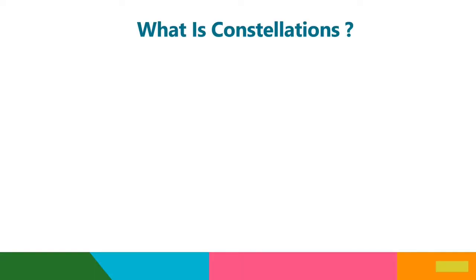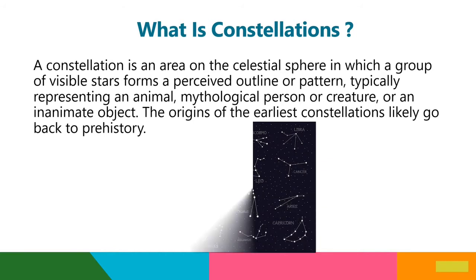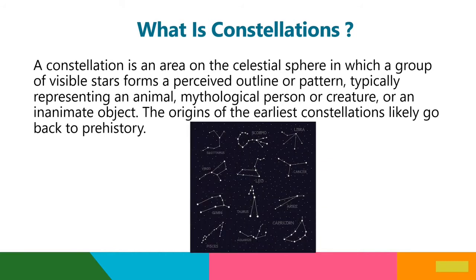What are constellations? A constellation is an area on the celestial sphere in which a group of visible stars forms a perceived outline or pattern, typically representing an animal, mythological person or creature, or an inanimate object. The origins of the earliest constellations likely go back to prehistory.